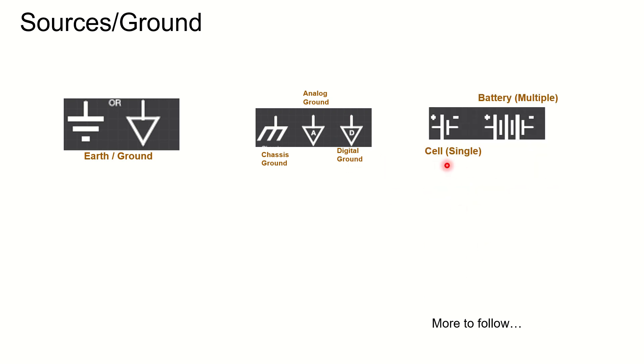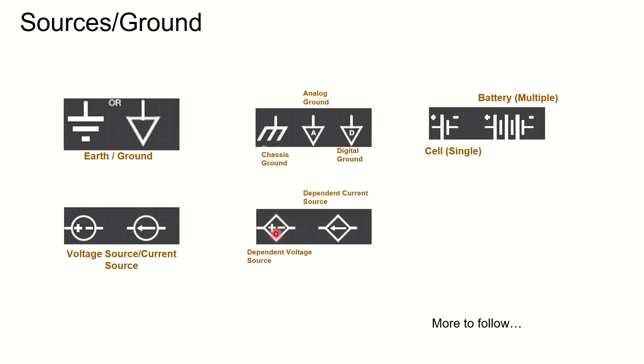Now sources. This is cell, single cell. Now this is multiple cells battery. You can see that this is the way we need to represent it. And this is the voltage source and this is the current source. This is dependent voltage source and this is dependent current source. And this is AC source.